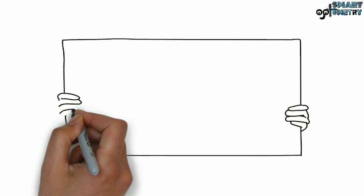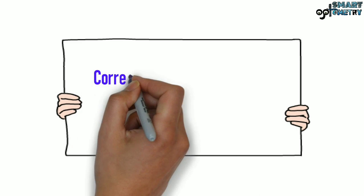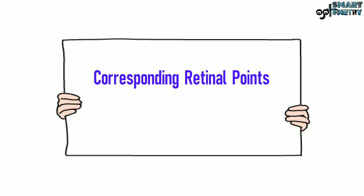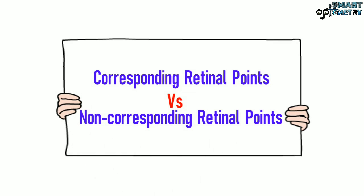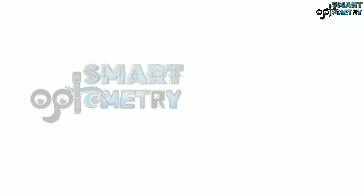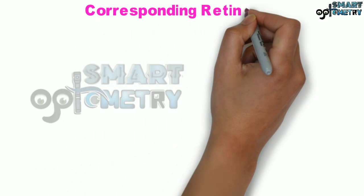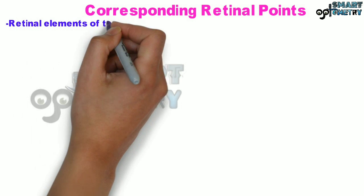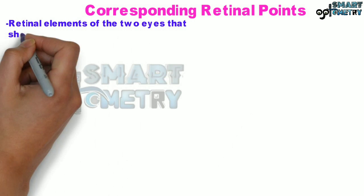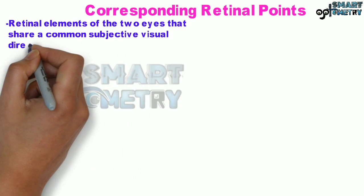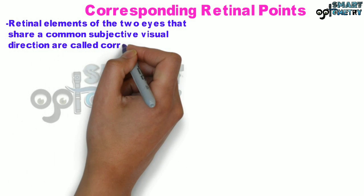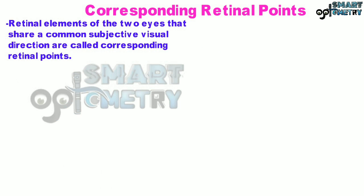Let's talk about Corresponding Retinal Points vs Non-Corresponding Retinal Points. Retinal elements of the two eyes that share a common subjective visual direction are called Corresponding Retinal Points.